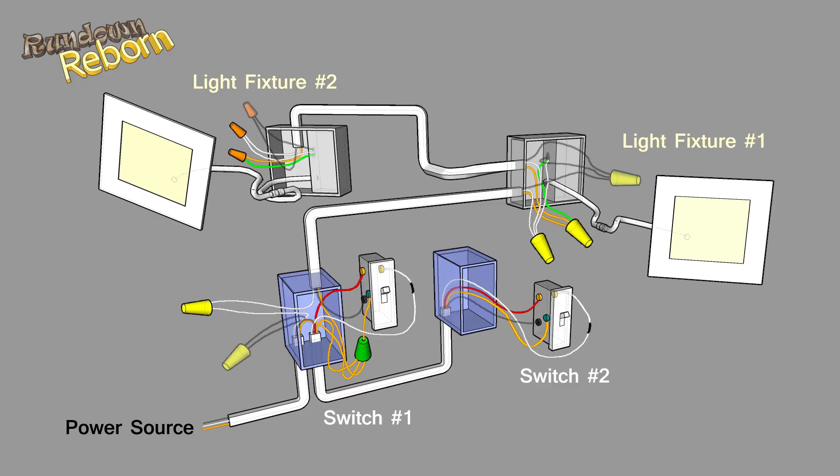The last set of wires to connect are the power wires or the hot wires and they are black in color. At the first switch, the black wire coming from the light fixture will be connected to the common terminal screw which is black in color.